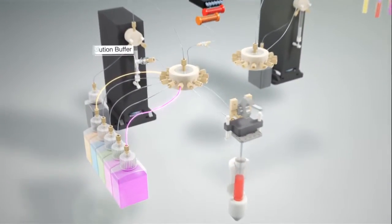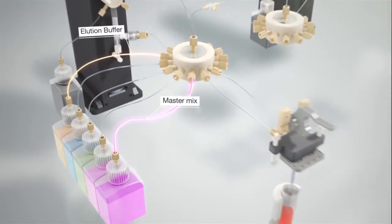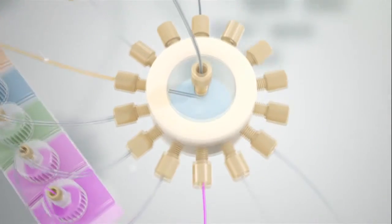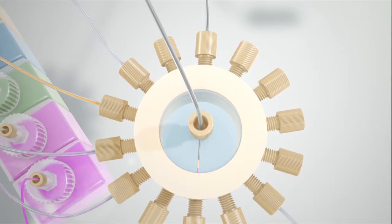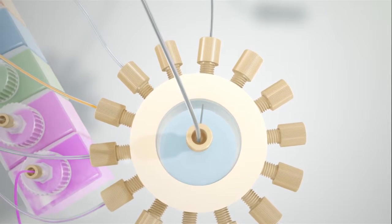The instrument first creates a negative control by combining elution buffer with MasterMix. This mixture is placed in the line leading to the thermal cycler followed by a slug of oil.